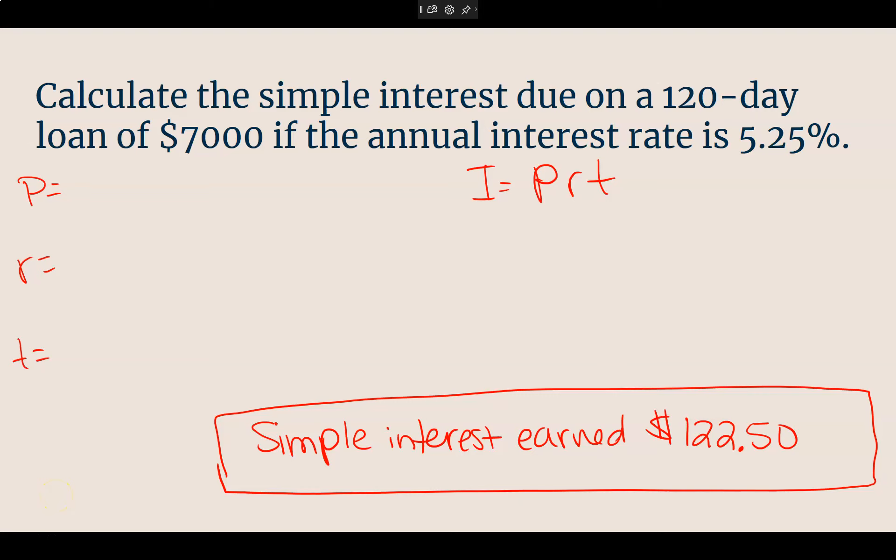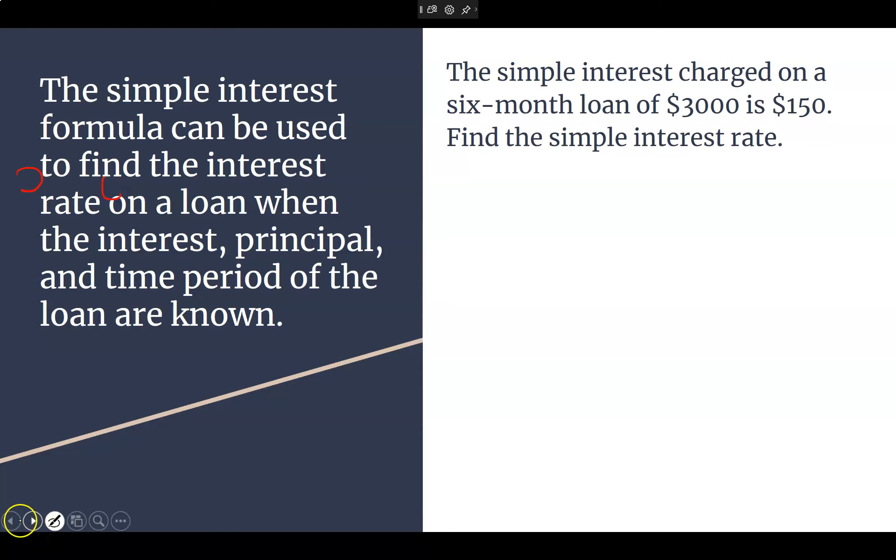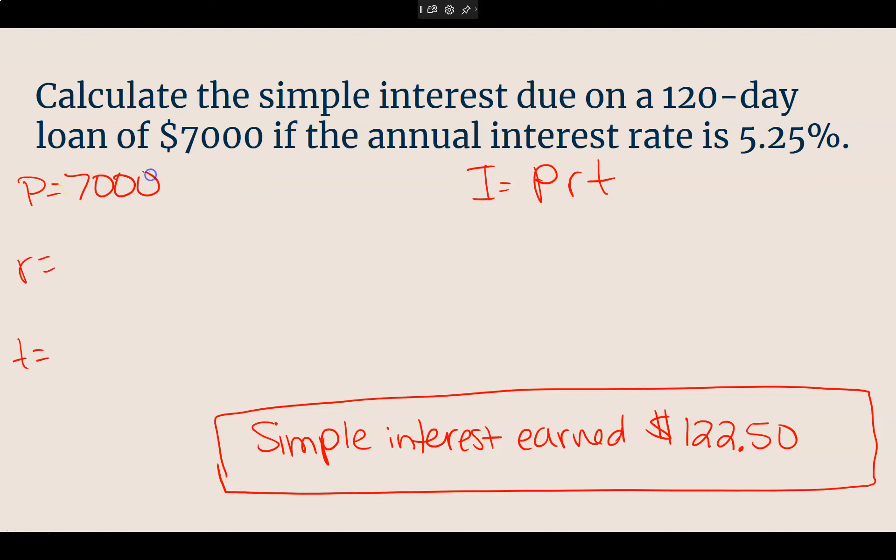What did you use for your principal for this one? $7,000. What's the rate? 0.0525. And the time? 120 out of the 360. You could convert it to 12 over 36. You could convert it to one third if you want to, but you don't have to. Setting it up. We're just going to multiply all of these levels together. And we should be getting our 122.5, which is $122.50.